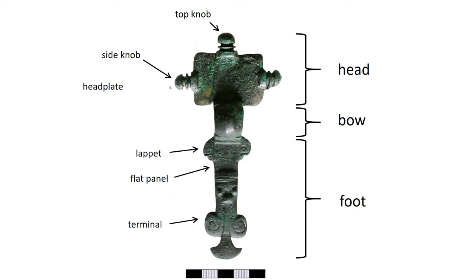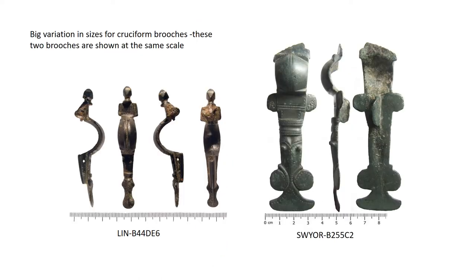Everything below the flat panel on the front and the catch plate on the reverse is called the terminal, and for the area below the nostrils we tend to use the word extension. Cruciform brooches can vary a great deal in size. The smaller ones tend to be earlier: narrower with more rounded knobs and a deeper catch plate on the reverse of the foot, with the catch plate extending down onto the reverse of the terminal. Later brooches tend to be larger overall, wider and flatter, with shorter catch plates.